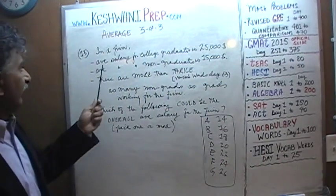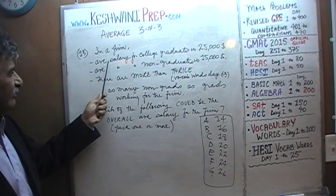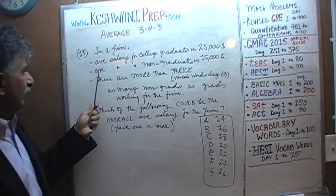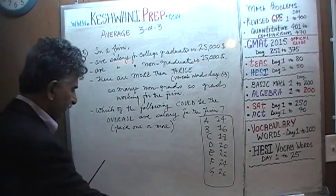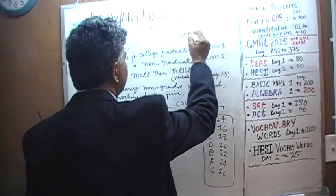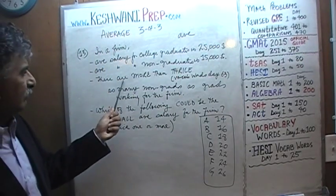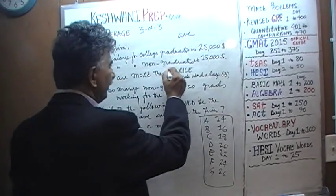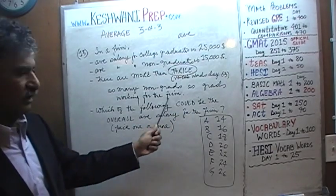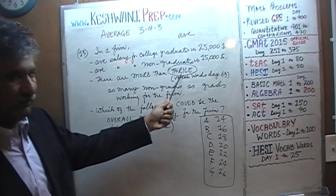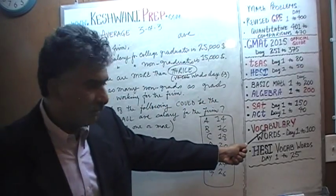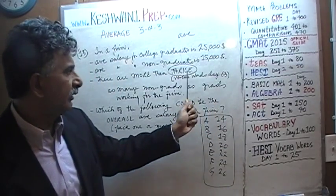Here is the problem. It says: in a firm, the average salary for college graduates is $25,000. The average salary for non-graduates is $15,000. I abbreviate average as ABE. We are further told that there are more than thrice as many non-graduates as graduates working for the firm. 'Thrice' is a vocabulary word we covered on day number 63 in our vocabulary lessons — you can type in 'vocabulary word day number 63' to find it.